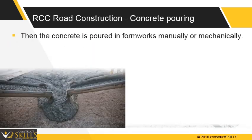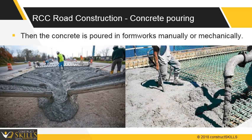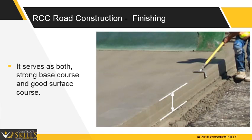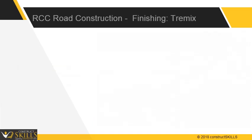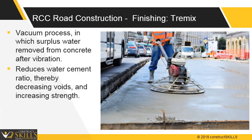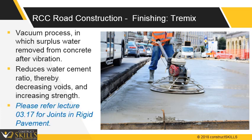The concrete is then poured into forms manually or mechanically. The RCC pavement slab serves as both a strong base course and a good surface course. Trimix is a vacuum process in which surplus water from the concrete is removed immediately after placing and vibration. This reduces the water-cement ratio to the optimum level, thereby decreasing voids and increasing the strength of concrete. Please refer to Lecture 03.17 for Trimix.